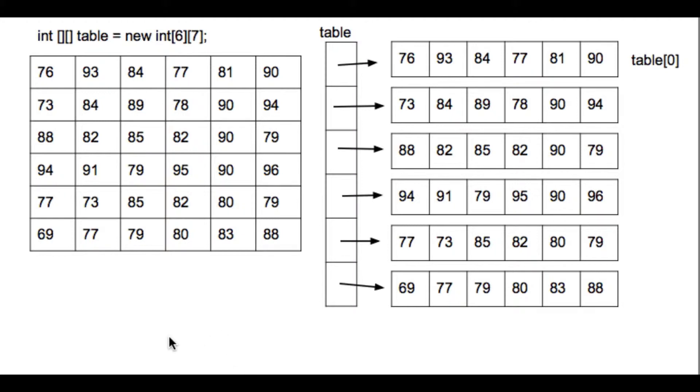I've got a two-dimensional table declared here with six rows and seven columns. And I've populated it with some values. And let's, for argument's sake, say that these represent test scores. And each row is a student. So this is student zero, this is student one, et cetera.